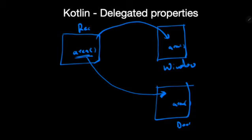Basically, what we have done here is we are delegating a class function to other classes and achieving the common functionality. Even though we have written this common functionality at one place, we can achieve that in multiple places. This is called a delegation pattern. Let's see how this representation looks in a code manner.